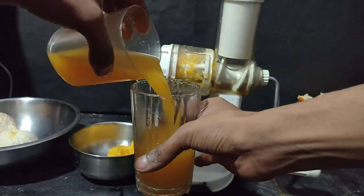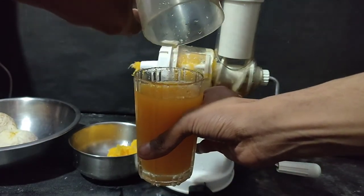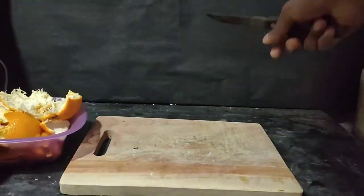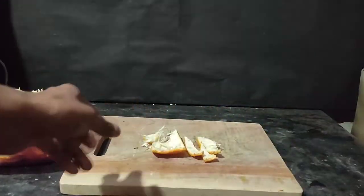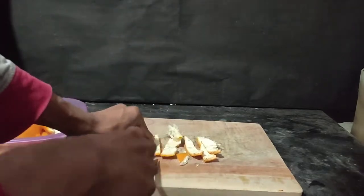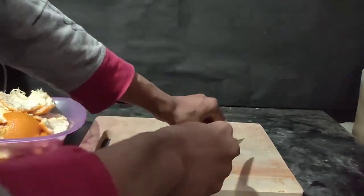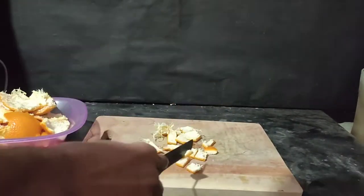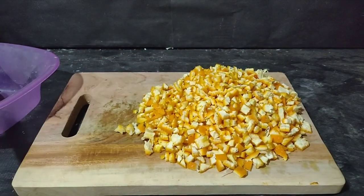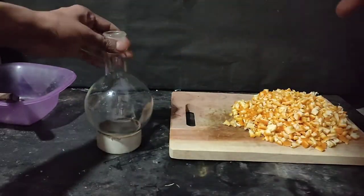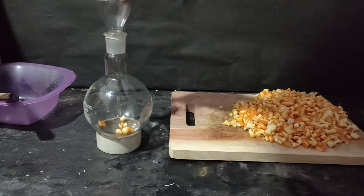My orange juice was ready. What should I do next? So I decided to extract limonene from these peels. For that, I cut the peels into small pieces. After chopping the peel, I transferred them into a 500ml round bottom flask.